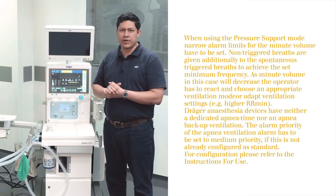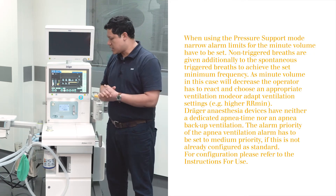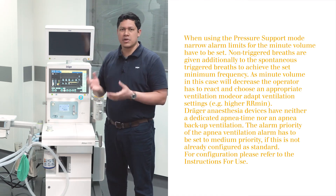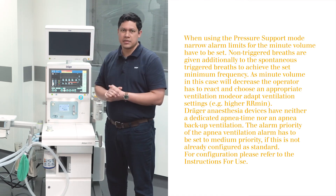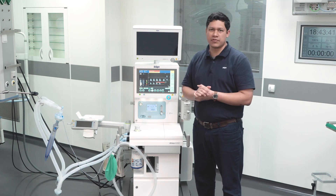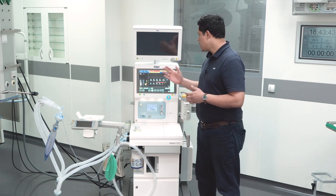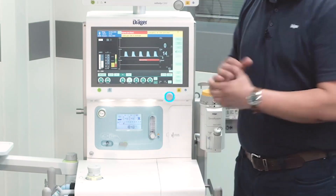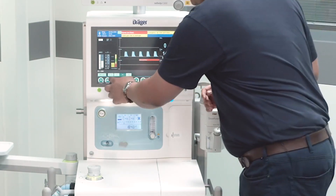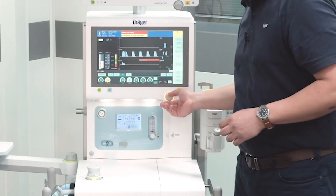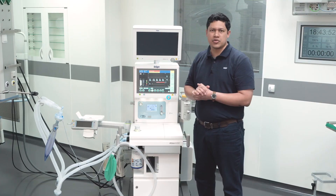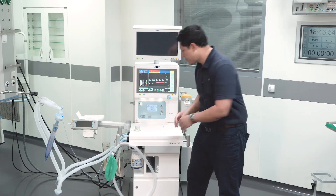In a situation of fresh gas flow deficit, you can spot a leakage by looking at the manual breathing bag — it will be emptied. When this occurs, you have to act immediately: detect and eliminate the leakages, and increase the fresh gas flow. Additionally, you can detach the manual breathing bag.